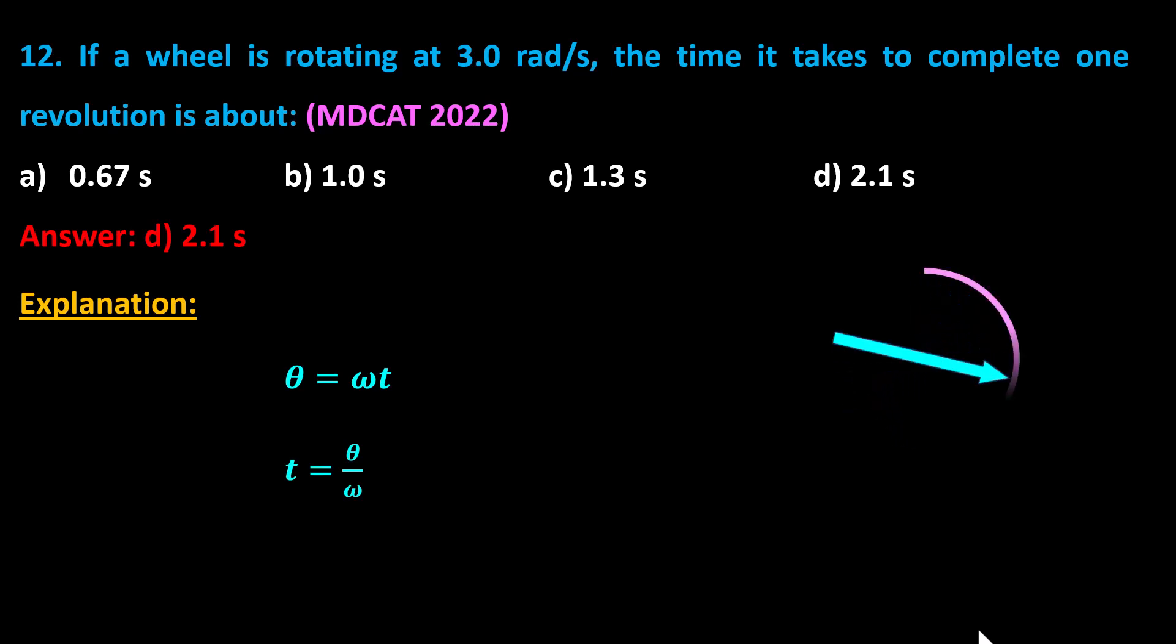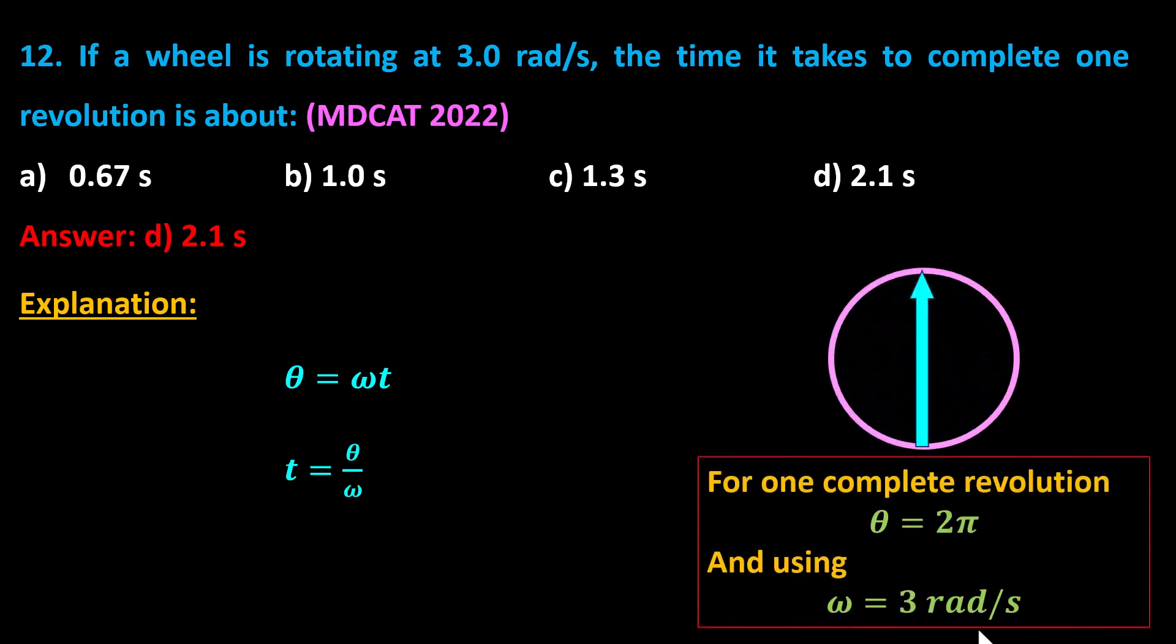For one complete revolution, theta equals 2 pi radians. Using omega equals 3 radians per second,